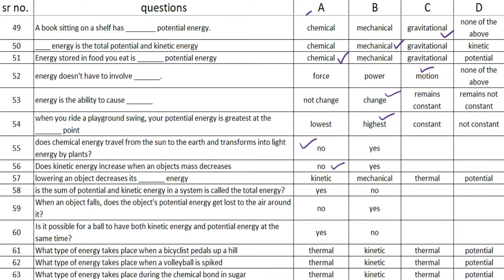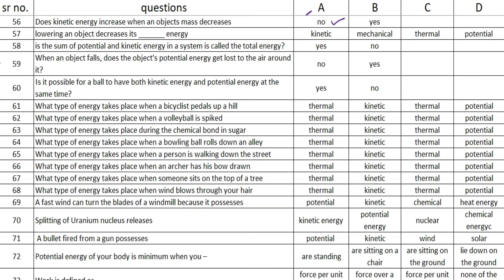The next question is: lowering an object decreases its blank energy, and the answer is option D — potential. The next one is: the sum of potential and kinetic energy in a system is called the total energy, and the answer is